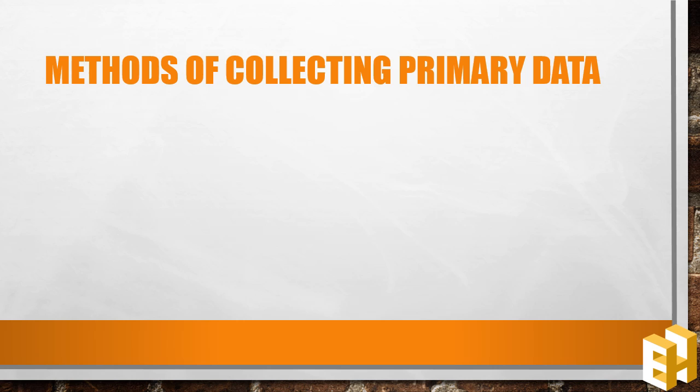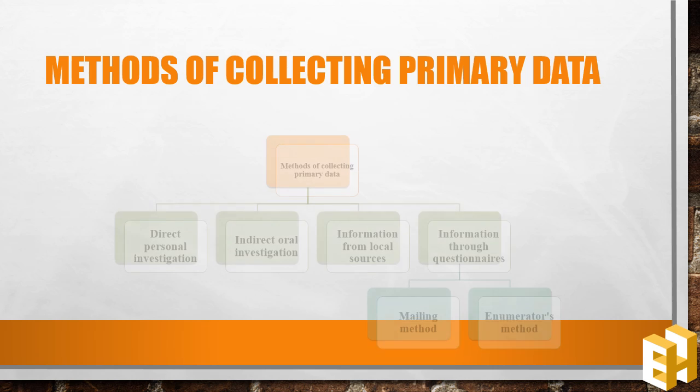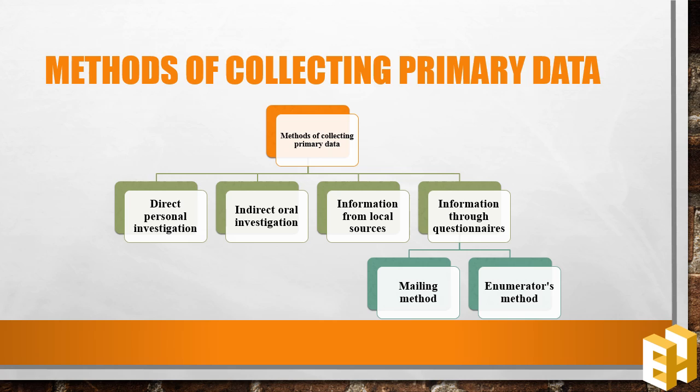What are the methods of collecting primary data? We have four methods: direct personal investigation, indirect oral investigation, information from local sources, and information through questionnaires, which further includes the mailing and enumerators methods. Let's discuss them in detail.